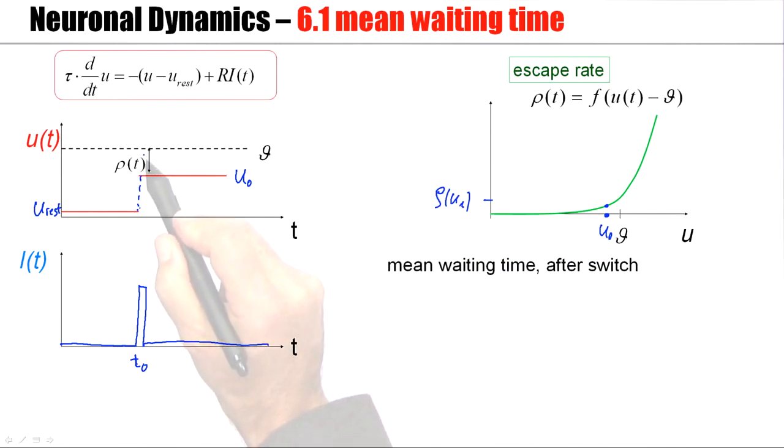This means after the switch, the neuron has a constant rate of firing. This is just like in the homogeneous Poisson process.